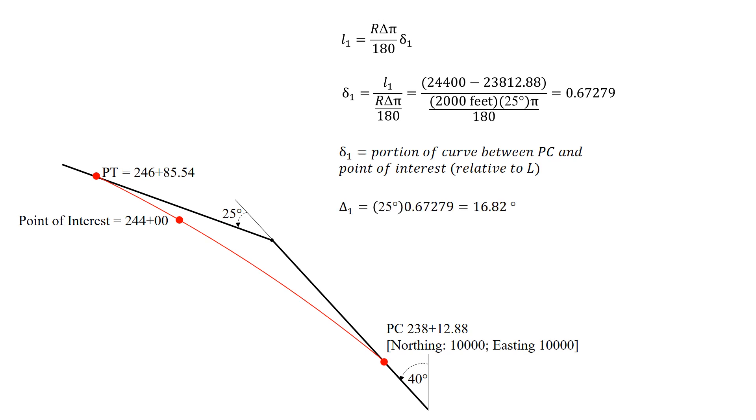So the delta to our point of interest is 25 degrees times that proportion, 0.67279, and that's 16.82 degrees.